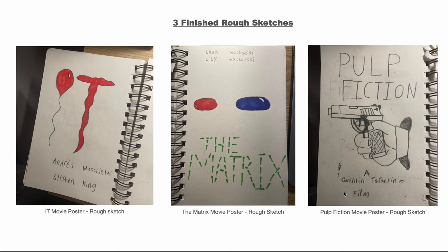These are my three finished rough sketches. After doing the mood board and the 30 thumbnail sketches, we had to pick three and give them more detail. The first one was the It movie poster with the eye being the balloon and a black background. Then I had the Matrix movie poster with the red and blue pill and a glitchy font — also black background. All of these were going to have black backgrounds. And then the Pulp Fiction poster with the gun, which is actually the one I did for my final project.